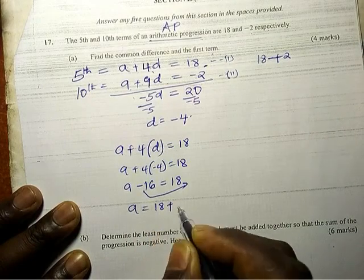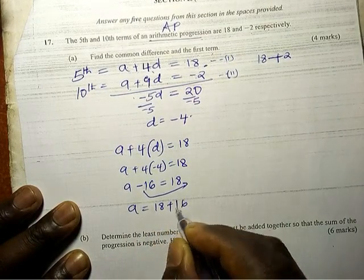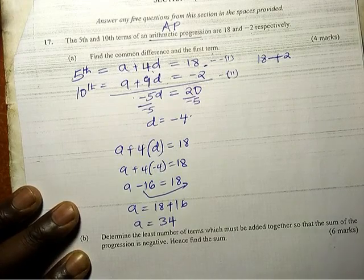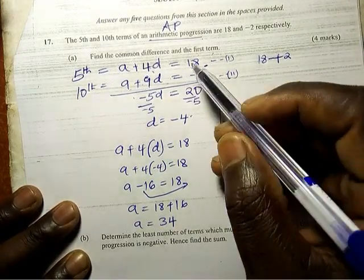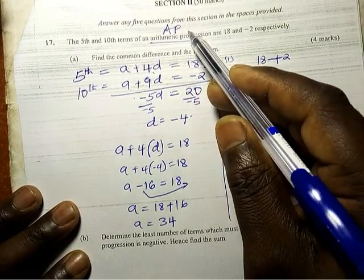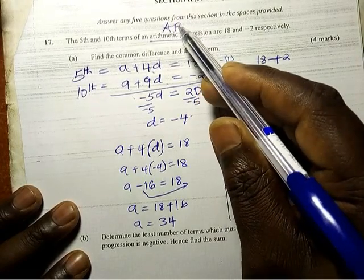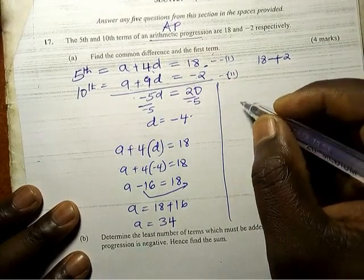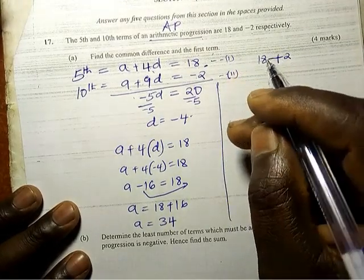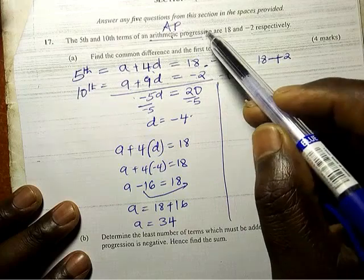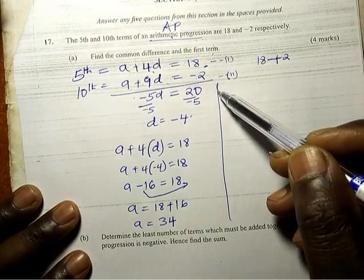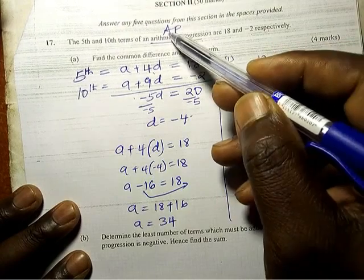A minus 16 equal to 18, so this one goes that way. So a is equal to 18 plus 16, so a is equal to 34. Therefore, I hope you understand arithmetic progression and geometric progression very well. If you don't understand, I have a video on series and progression. You can check it on the link in the description, so you will find AP there.